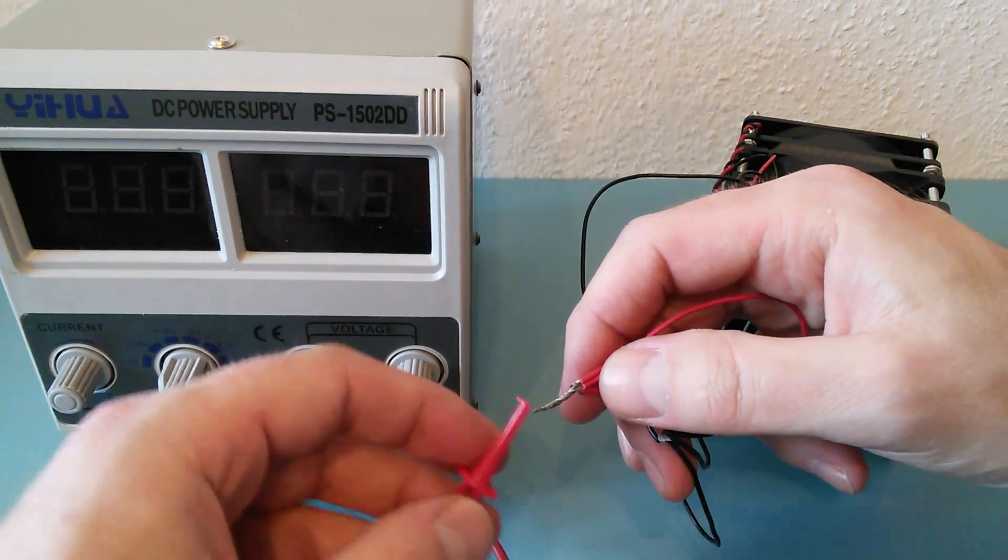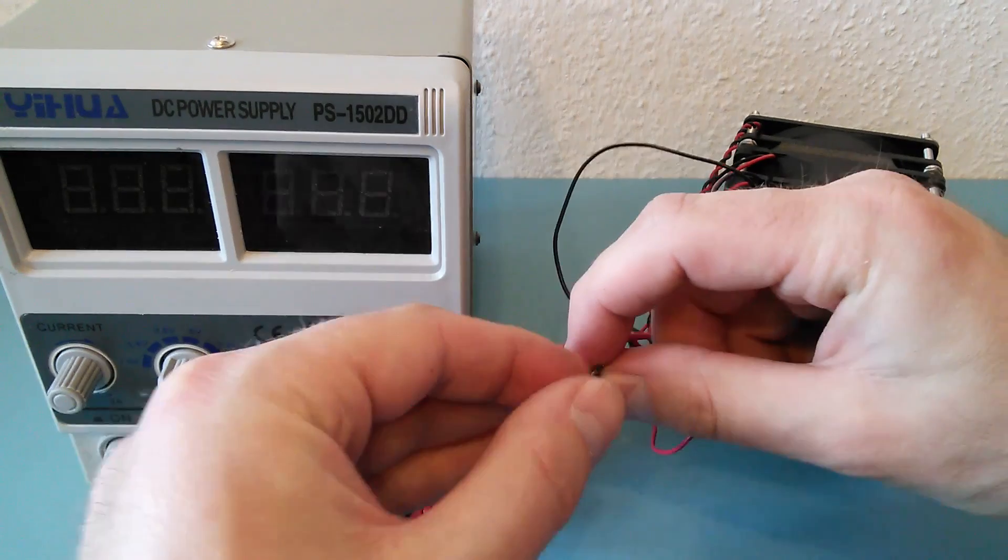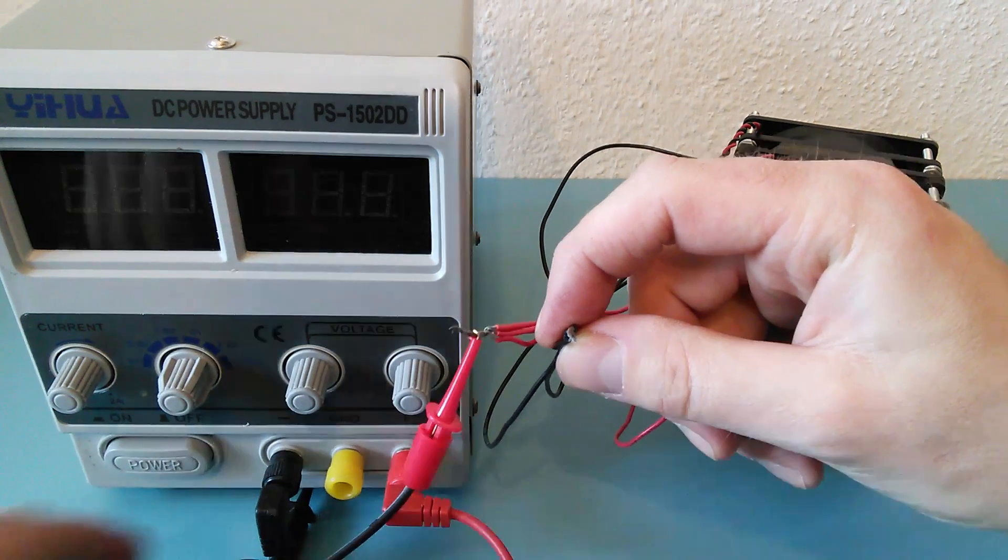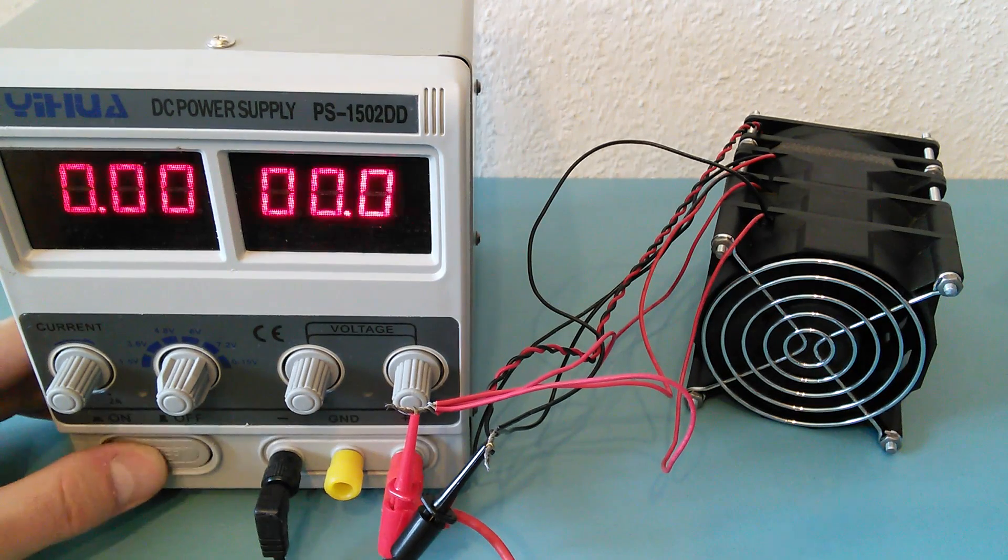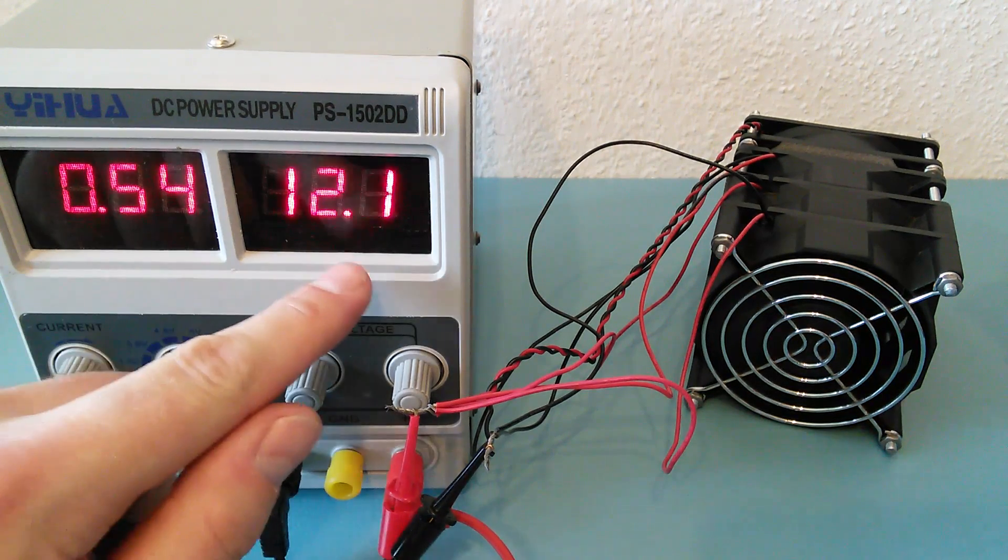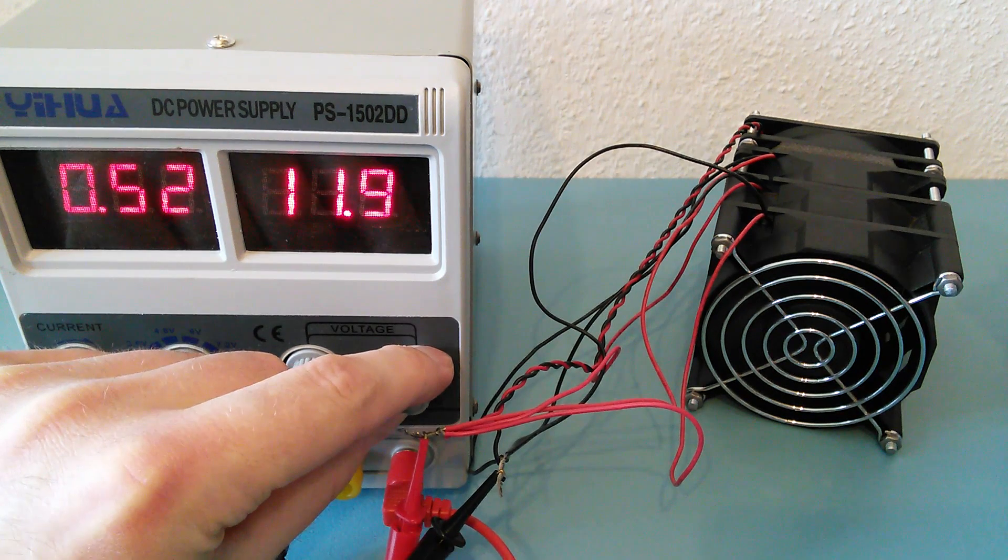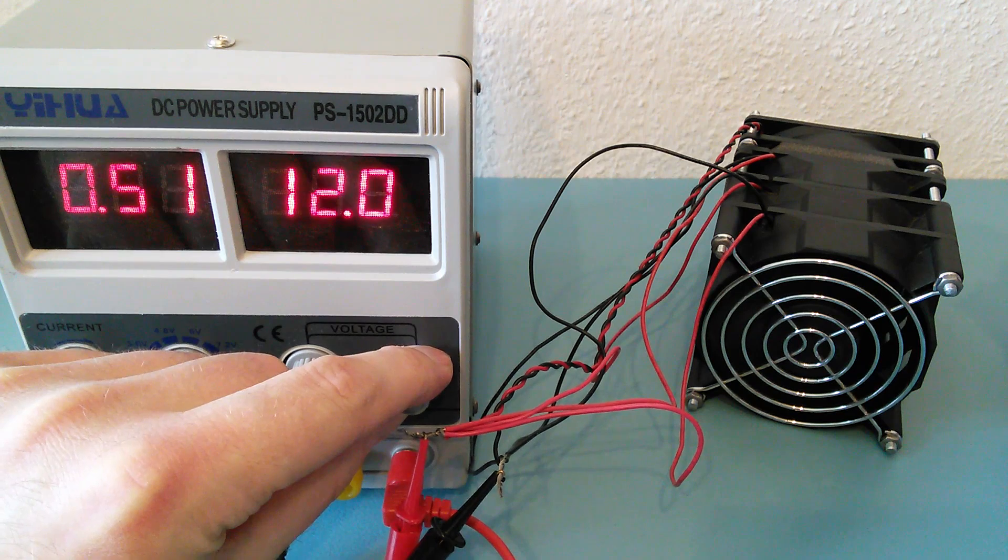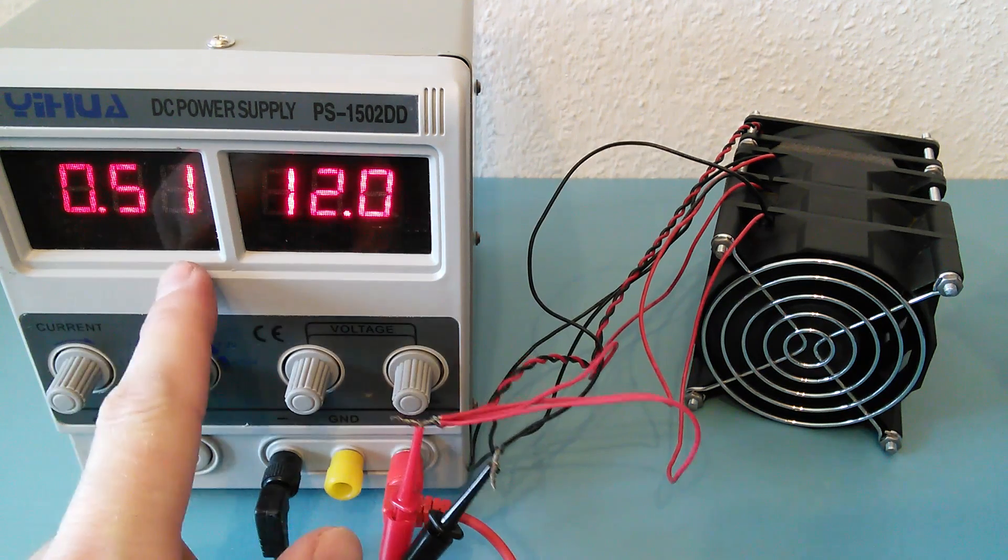Let's hook it up to a power supply and see how it works. This fume extractor needs 12V DC. As you can see, it consumes about half an amp.